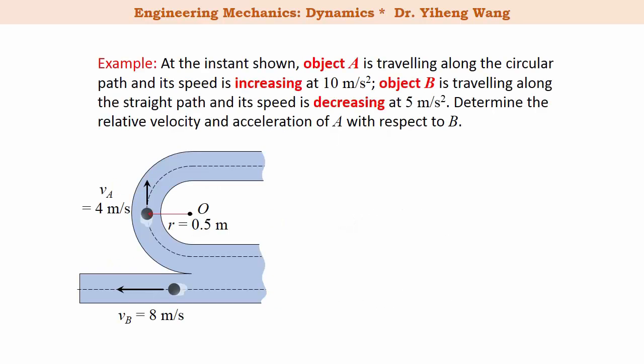Let's look at this example. The two objects A and B are moving along different paths. Their velocities at this instant are given, and also we know that the speed of A is increasing at 10 m per second squared, and the speed of B is decreasing at 5 m per second squared. We need to determine the relative velocity and acceleration of A with respect to B.